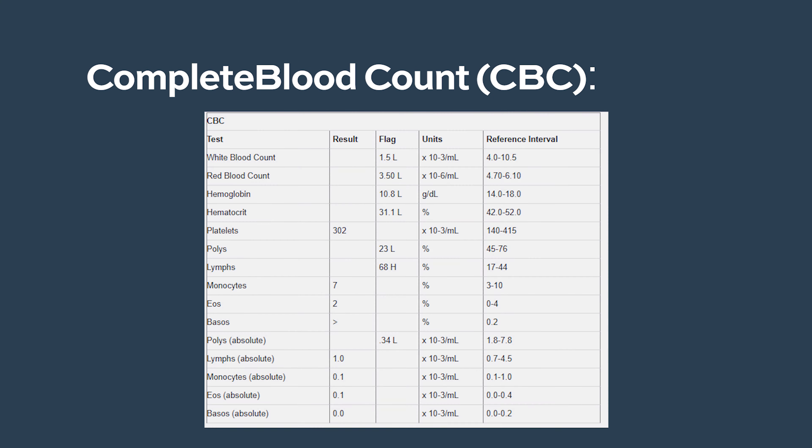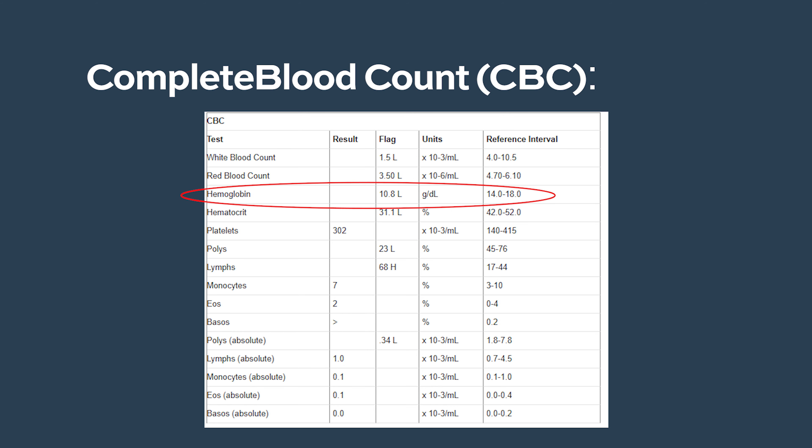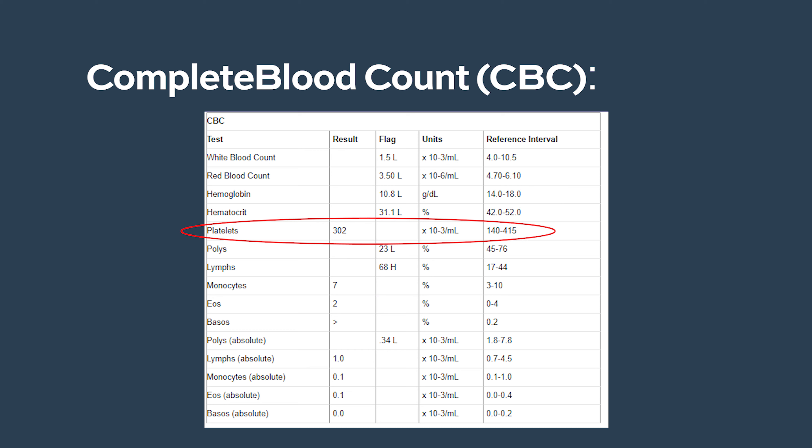The most important test done to initially pick up AML is the complete blood count. Patients with acute myeloid leukemia will either have a low white count or a high white count — interestingly, it can be either. Sometimes immature blasts stay in the bone marrow and the white count goes very low; other times these blasts are released into the bloodstream and the white count can be very high. Patients will also be anemic with low hemoglobin, and generally the platelet count will also be low.